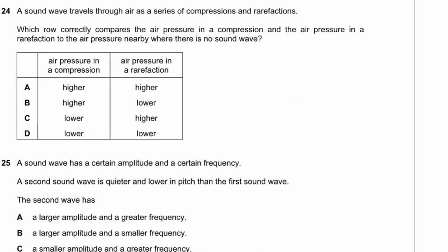Question 24. A sound wave travels as compressions and rarefactions. A compression is an area of high pressure; a rarefaction is an area of low pressure. The air pressure in a compression is higher than normal, and in a rarefaction it is lower. Answer B.